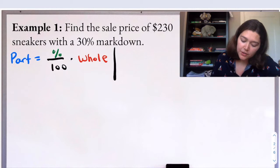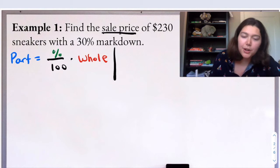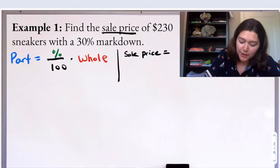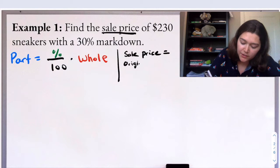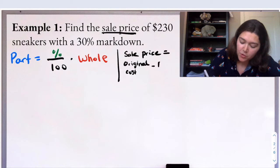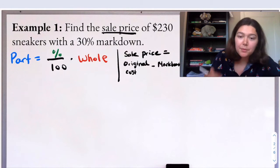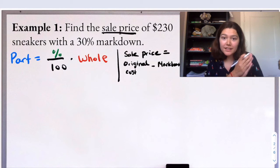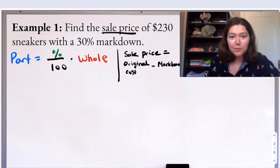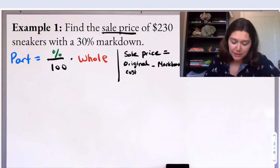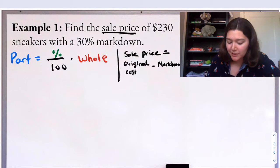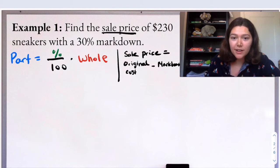We're trying to find the sale price of sneakers that cost $230 originally, and then have a 30% markdown. So what I'm actually going to do to the side here before I label anything is I'm trying to figure out the sale price. So I need to understand what does sale price mean? The sale price is going to be equal to the original cost of the item minus the markdown, or the amount of the decrease. So I'm taking the original cost and then how much am I marking down that item? That's how I'm going to get the sale price.